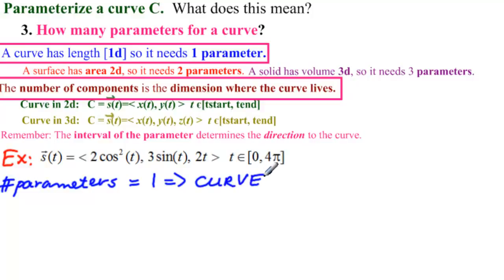If I saw two, I would say surface, et cetera. Now, I say number of components. I say one, comma, two, comma, three, and I say curve lives in 3D, so this is a 3D curve.